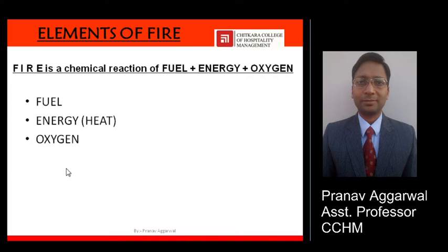There has to be a particular level of heat or temperature for a fire to start. The third element required for any kind of fire is oxygen. Oxygen we get in the form of air — whatever air is present, it has got oxygen in it, and that much oxygen is sufficient for any reaction to take place. For any fire to start, all three of these things are compulsory. In case any one of these three is missing, fire will not take place because the reaction would not be completed. So these are the elements of fire, and all three are necessary for any kind of fire to start.